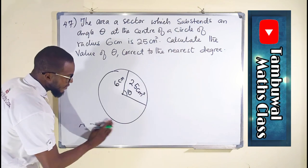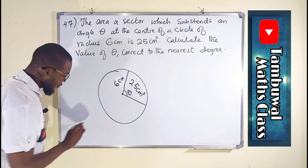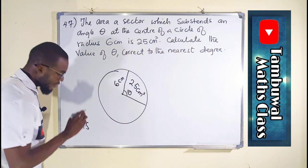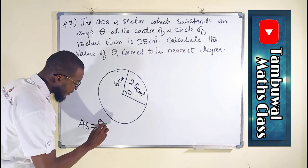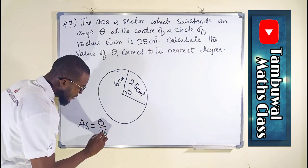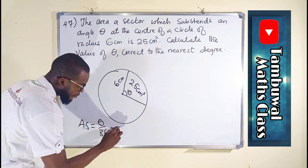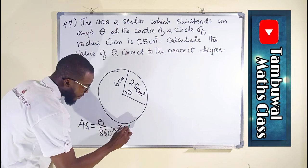So the area of this sector is equal to theta divided by 360 degrees times pi r squared.